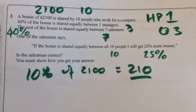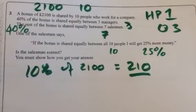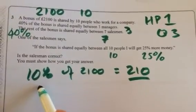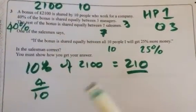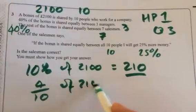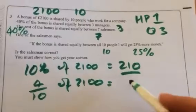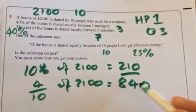But then what we have to do is find out the total money they would get. So if we find 40% of 2,100, which is split between the three managers. So I'll do 40% as four-tenths of 2,100. We get? We get 840.